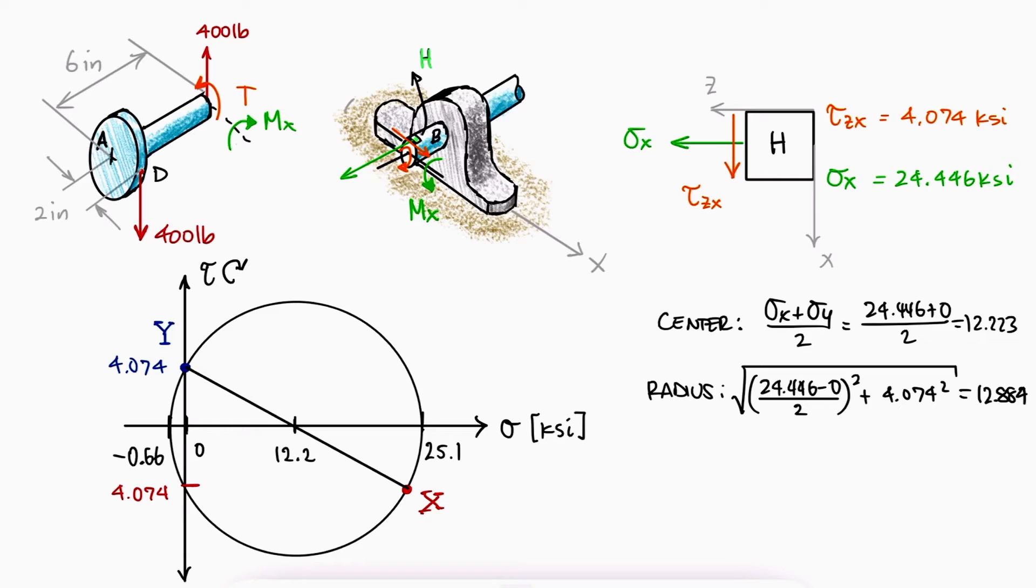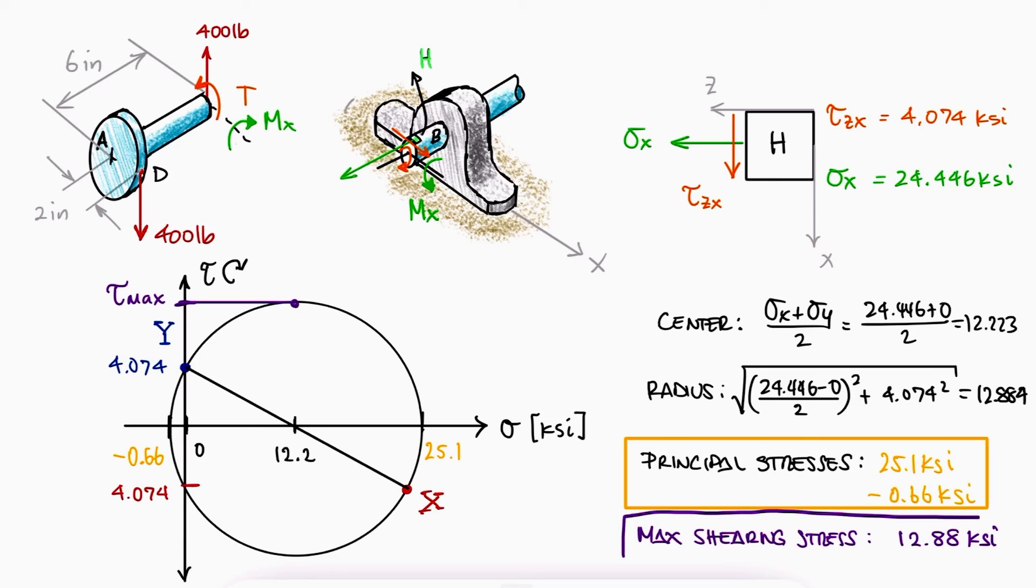The principal stresses would therefore be 25.1 and minus 0.66. The maximum shearing stress would be the same as the radius, at 12.88 ksi.